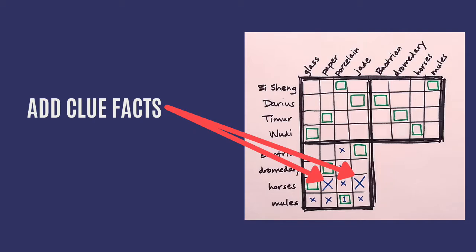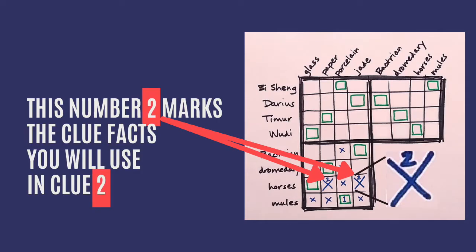For clue two, let's choose a couple of clue facts. We can use more than one fact per clue. We'll pick: horses and jade is going to be a no, and horses and paper is going to be a no. Then, I like to write twos over the x's to remind me to use them in clue two.